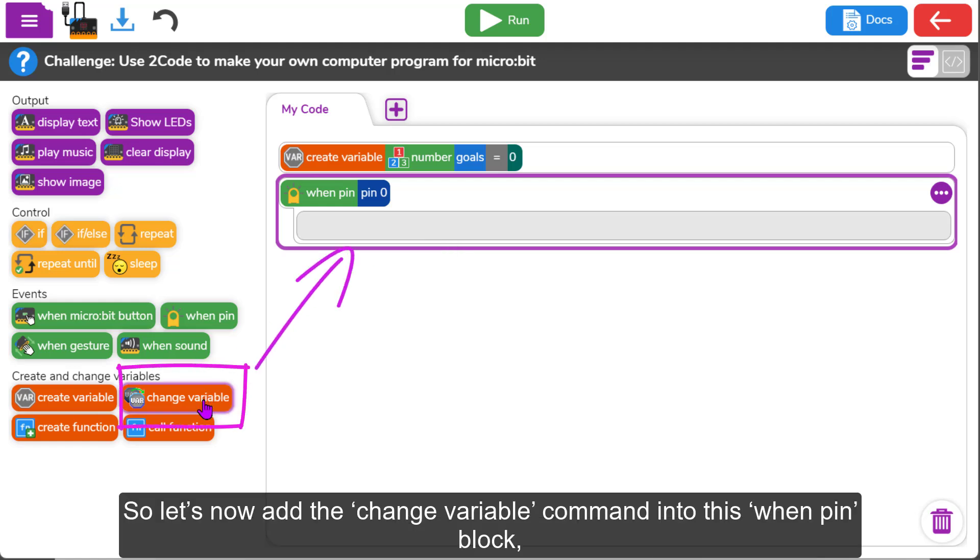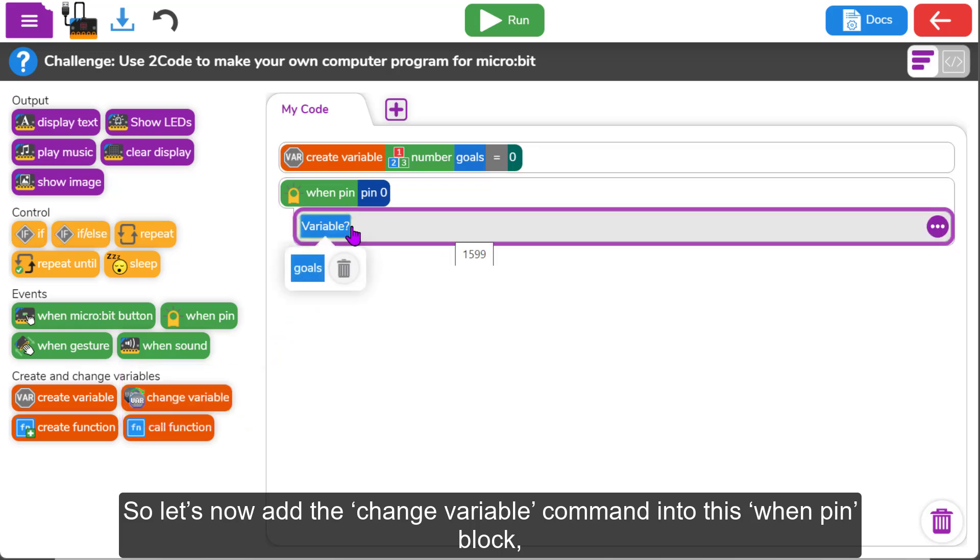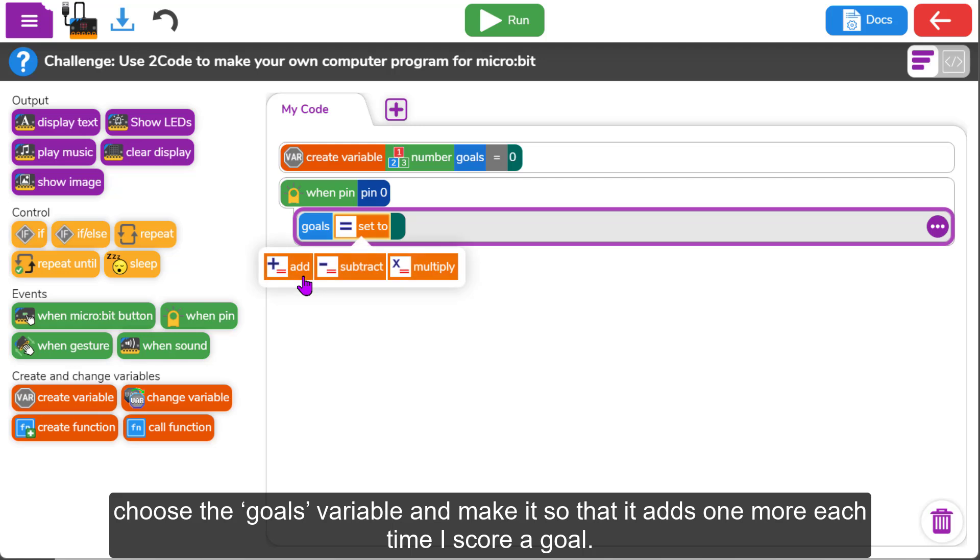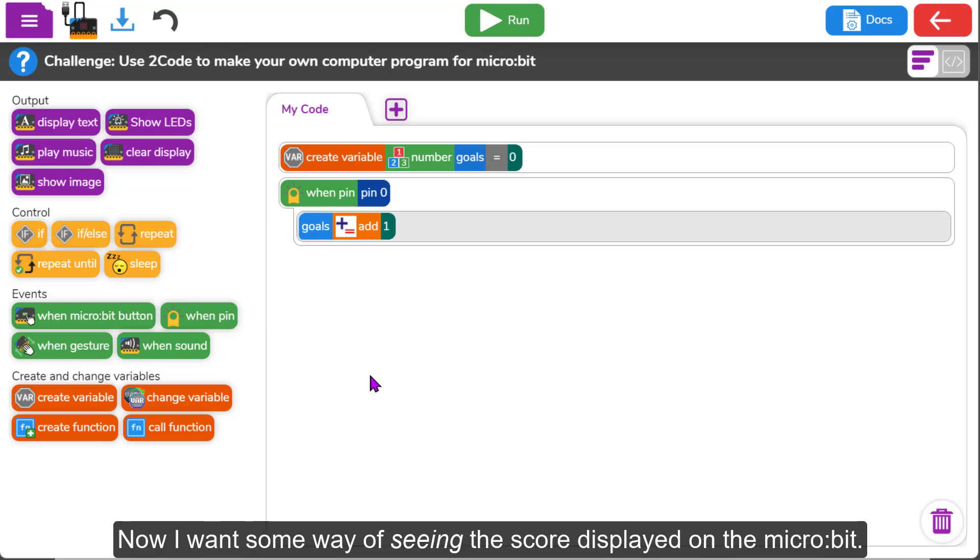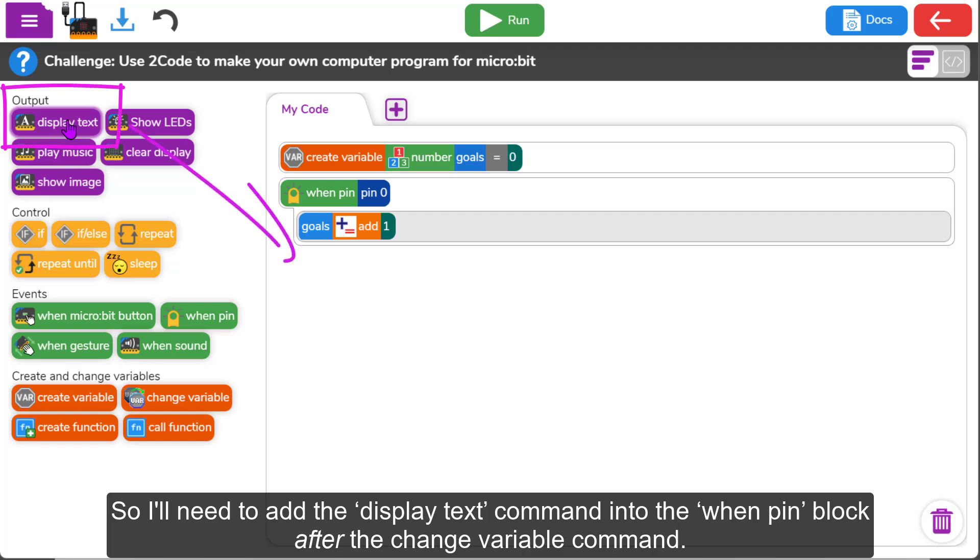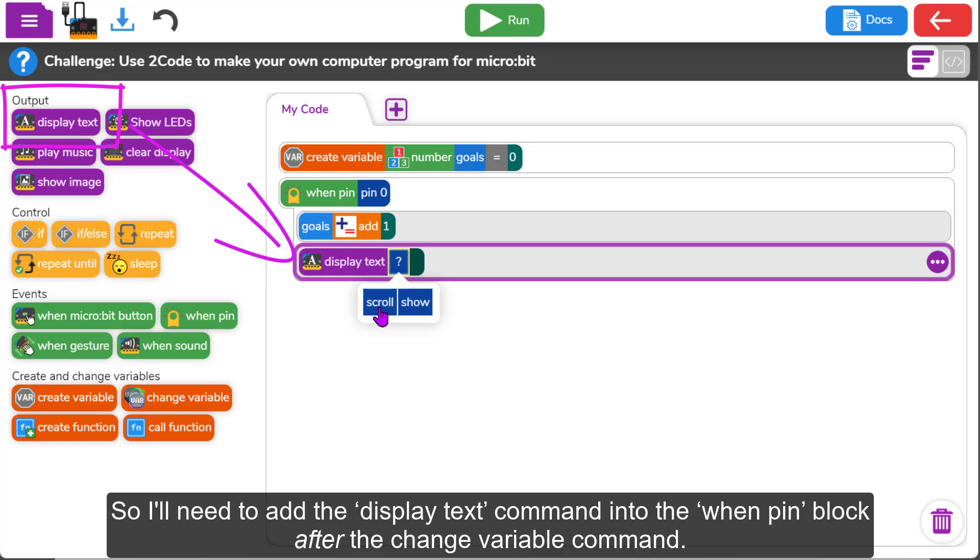So let's now add the change variable command into this when pin block. Choose the goals variable and make it so that it adds one more each time I score a goal. Now I want some way of seeing the score displayed on the microbit. So I'll need to add the display text command into the when pin block after the variable changes.